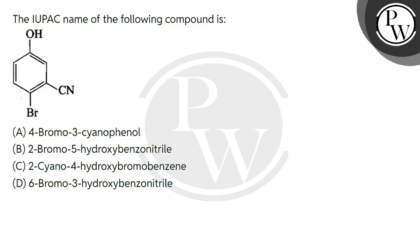We need to know the priority order. The priority order is CN, then OH functional group, and least Br.